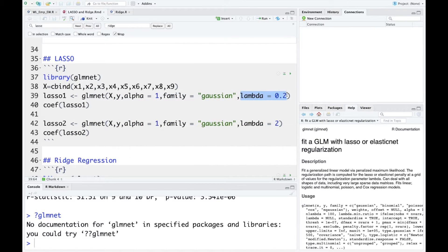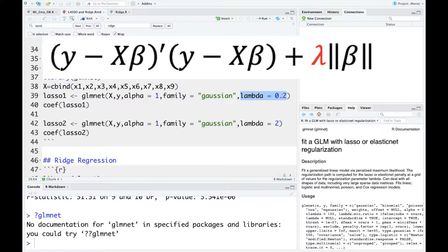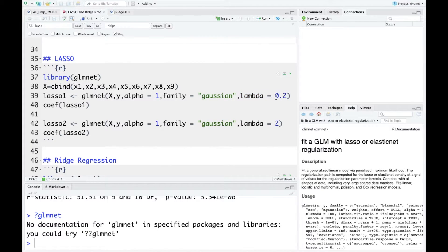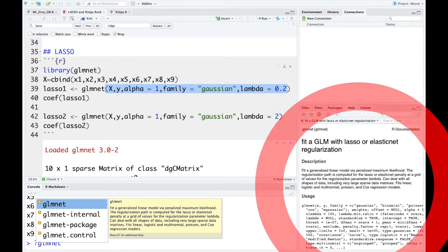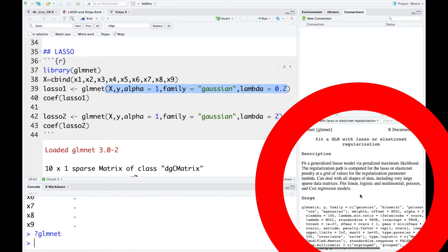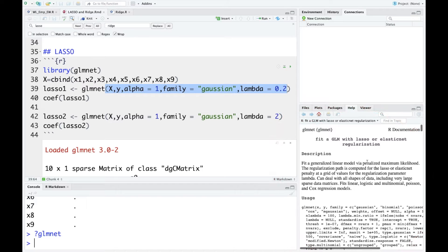For lambda, remember that lambda is actually a user defined parameter in the formulation of Lasso. So here I set two distinct values for lambda. One is 0.2, the other is 2. As you can see, there are many arguments to be specified and sometimes you may not be able to memorize that. So what you can do is to put a question mark here, then type the function name. Then as you can see on the right panel, you do have the information with regard to this particular function glmnet.